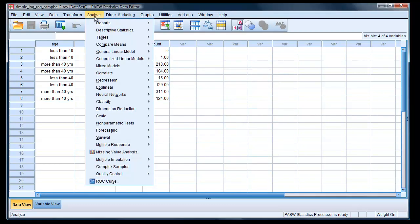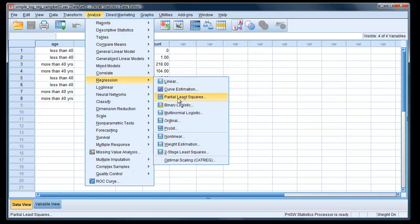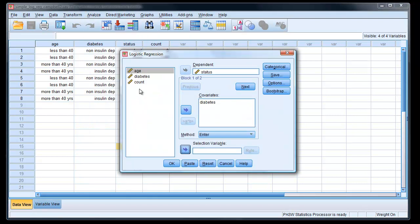To actually carry out the analysis, we go Analyze, Regression, Binary, Logistic. Analyze, Regression, Binary, Logistic. We look here and we've got dependent variable status, which is whether they're alive or dead. And then we have covariates, which is diabetes, so diabetes status.